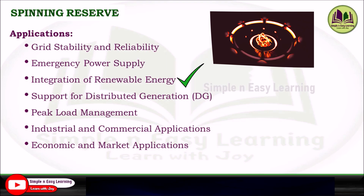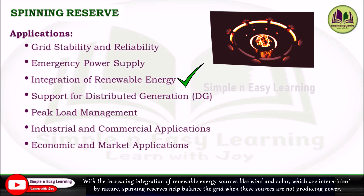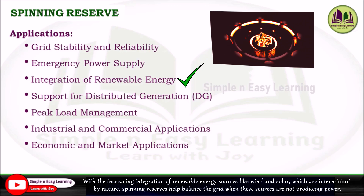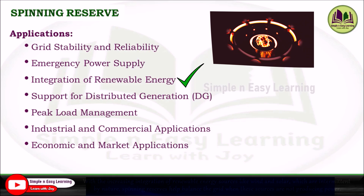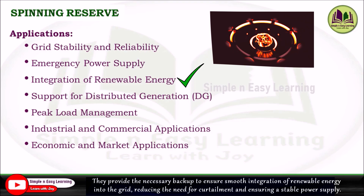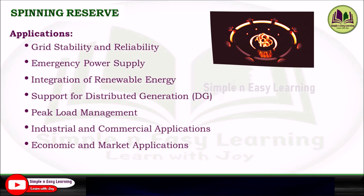The third application is integration of renewable energy. With the increasing integration of renewable energy sources like wind and solar, which are intermittent by nature, spinning reserves help balance the grid when these sources are not producing power. They provide the necessary backup to ensure smooth integration of renewable energy, reducing the need for curtailment and ensuring a stable power supply.